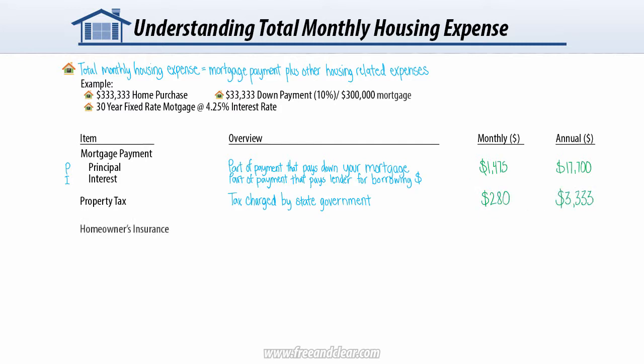Next, we're going to look at homeowner's insurance. This is insurance that protects you and the lender in case something like a fire damages your house, also known as hazard insurance. Lenders require that borrowers have homeowner's insurance to obtain a mortgage. Insurance premiums vary depending on the value of your property, where it's located, your coverage level, and deductible. Homeowner's insurance is typically paid on an annual basis. In this example, our annual homeowner's insurance cost is $350, so our monthly cost is approximately $30.